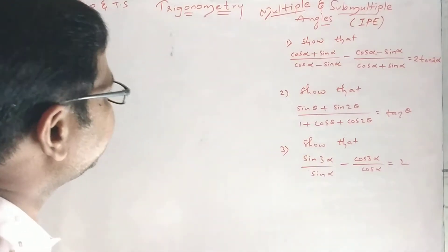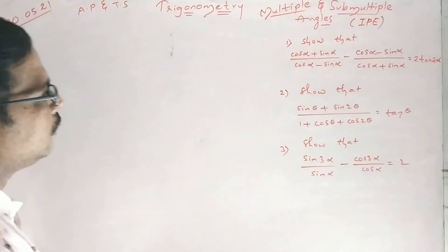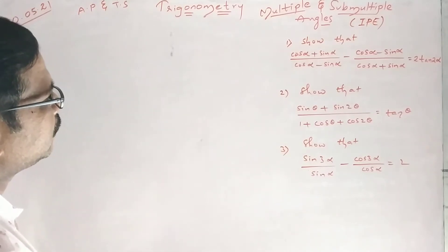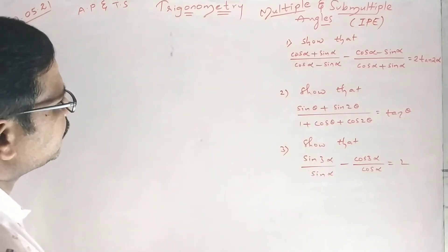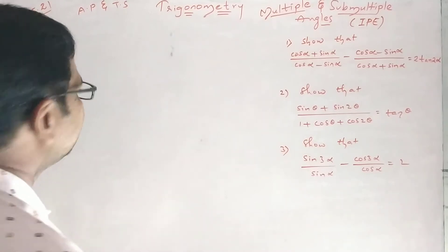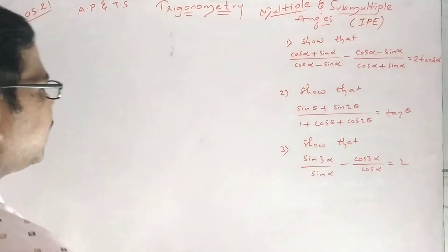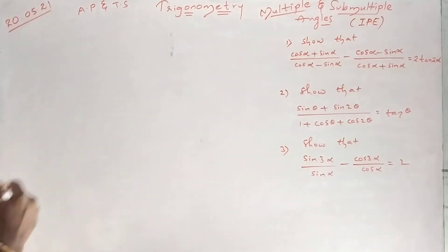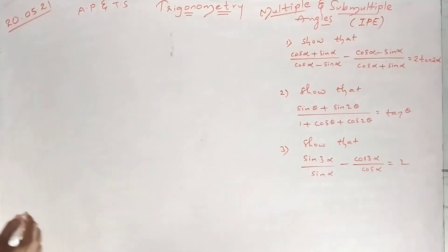Hello students, good evening everybody. Look at these problems. Show that (cosα + sinα)/(cosα − sinα) minus (cosα − sinα)/(cosα + sinα) equals 2tan2α.